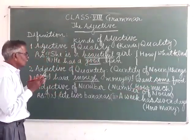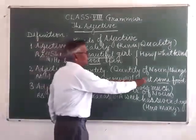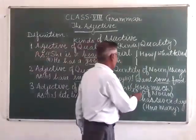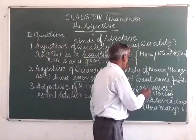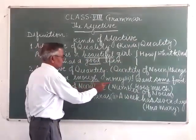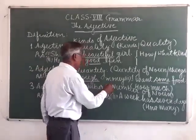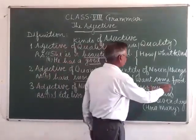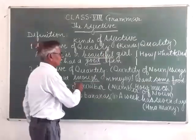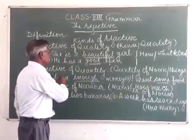To identify the adjective of quantity, we use 'how many' or 'how much.' For example, in the sentence 'I have enough money,' the question arises: 'How much money do I have?' And in 'I want some food,' we ask 'How much food do I want?' The answers — enough and some — are therefore adjectives of quantity.